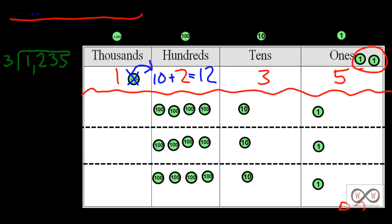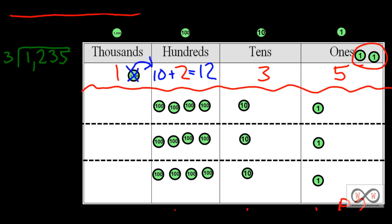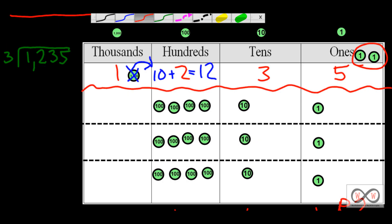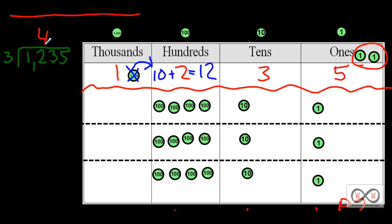Now that we've done that on the place value chart, let's see what happens with the traditional method. When we divide with the traditional algorithm, we start with the place with the highest value — in this case the thousands place — and we have a 1. We're going to divide 1 by 3. We really couldn't do that until we broke up the 1, just as we showed on the place value chart. So now we have 12 hundreds that we're dealing with, and we're going to divide by our divisor of 3. So 12 divided by 3 — if you're thinking 4, you'd be absolutely correct. 4 times 3 is 12.